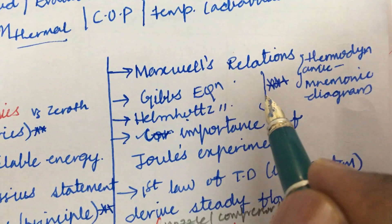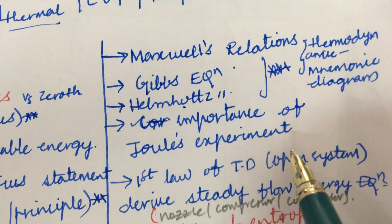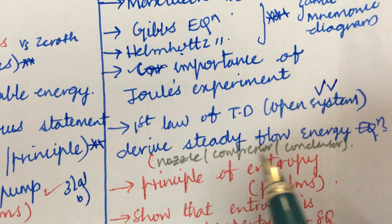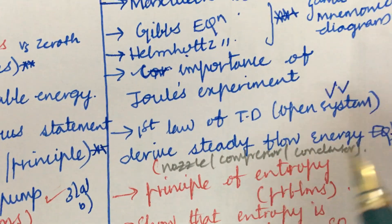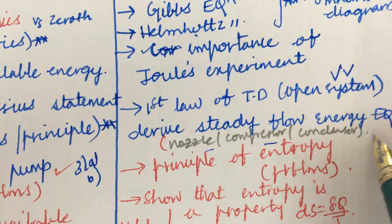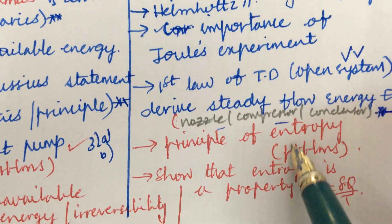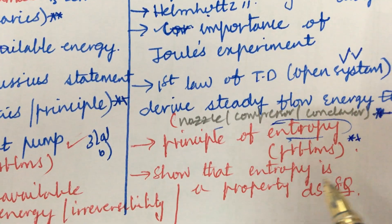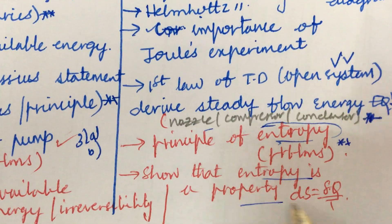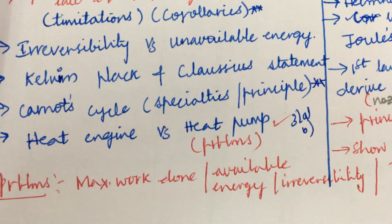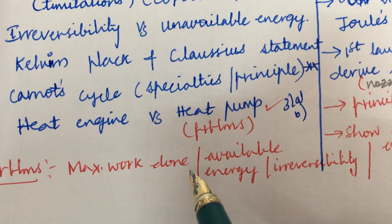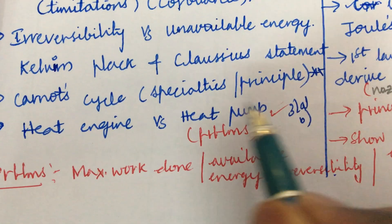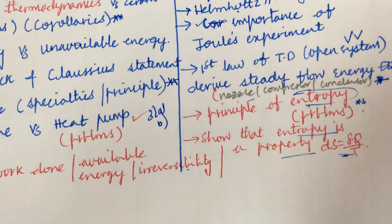And the importance of Joule's experiment in the first law of thermodynamics, open system, a problem as well as the derivation for steady flow energy equation taking into consideration nozzle, compressor, and condenser may be also very important. And the principle of entropy, related to entropy will be getting one problem for sure, and prove that entropy is a property for this. And the problems related to the maximum work done and the available energy and irreversibility and heat engine and heat pump problems and the entropy problems will be covered, dear students.